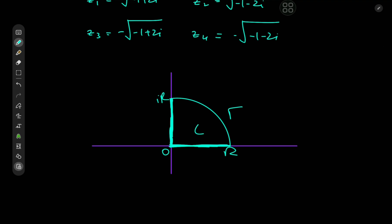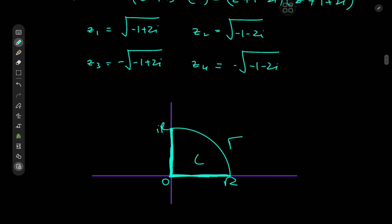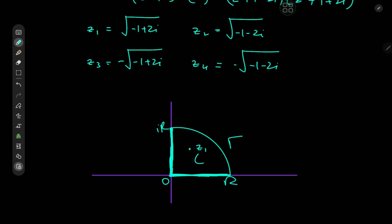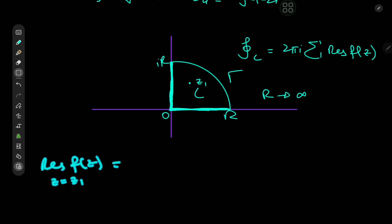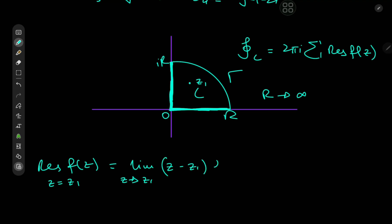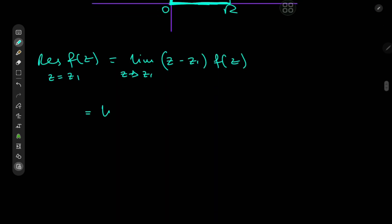There is only one pole enclosed by our contour, and that is z₁. So we only have one residue to evaluate. We know that the integral over the closed contour C equals 2πi times the sum of residues of f(z) enclosed by our contour, and we're interested in the limiting case of R going to infinity. The residue of f(z) at z = z₁ is computed as the limit as z → z₁ of (z − z₁) times f(z).